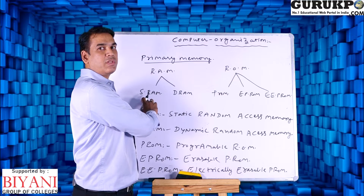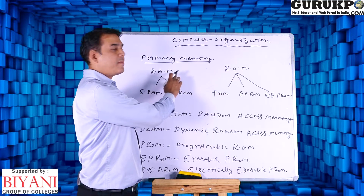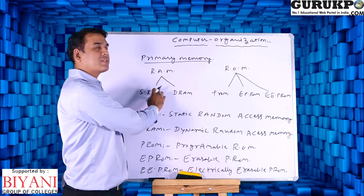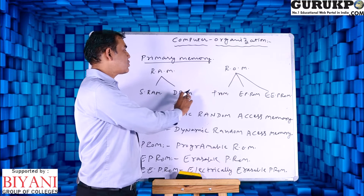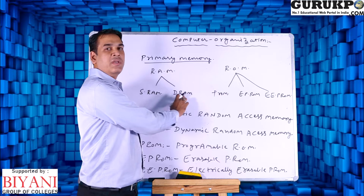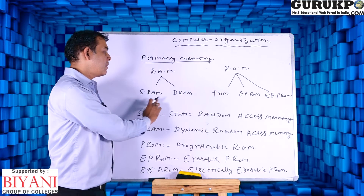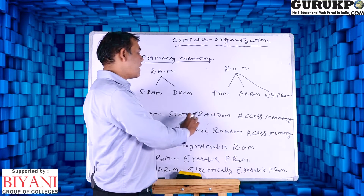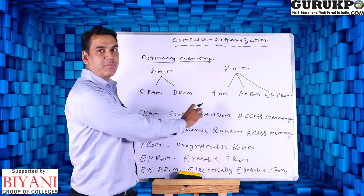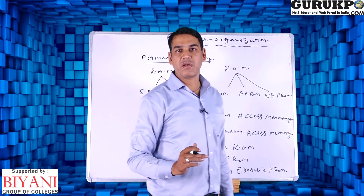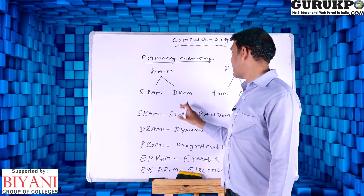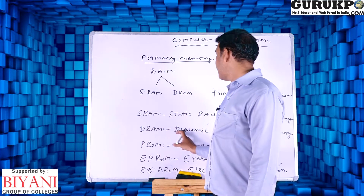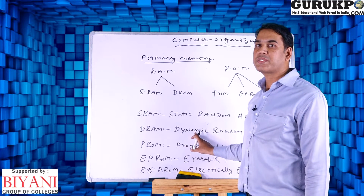First of all let us discuss about RAM. RAM is random access memory; it is divided into two parts — first is called SRAM and second is called DRAM. SRAM is called static random access memory and DRAM is called dynamic random access memory. In normal PCs we commonly use DRAM.